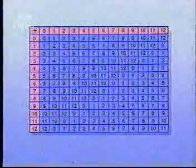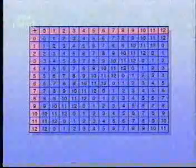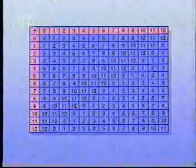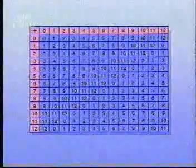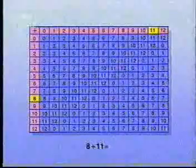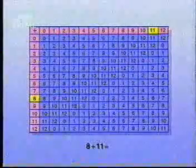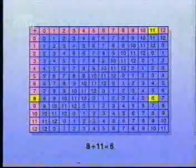The error correcting codes employed on CDs use a special type of arithmetic called a finite field. For example, this is how addition works when you only use numbers from 0 to 12. You add the numbers as usual, but for your answer you take the remainder on dividing by 13. So 8 plus 11 normally gives 19, but if we take the remainder on dividing by 13, we get 6 as the answer instead.